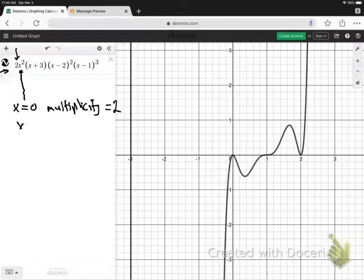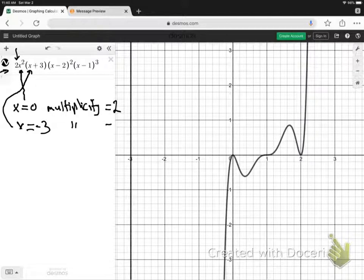Right, we also have x equals negative 3 as a zero, right there, and can you see that just has a multiplicity of 1.